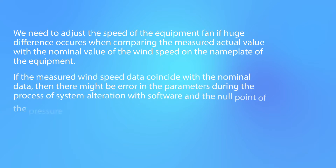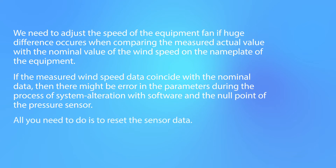If the measured wind speed data coincides with the nominal data, then there might be an error in the parameters during the process of system alteration with software, or an error in the null point of the pressure sensor. All you need to do is reset the sensor data.